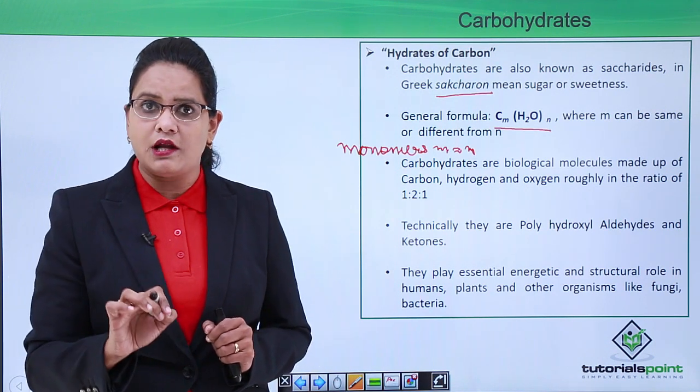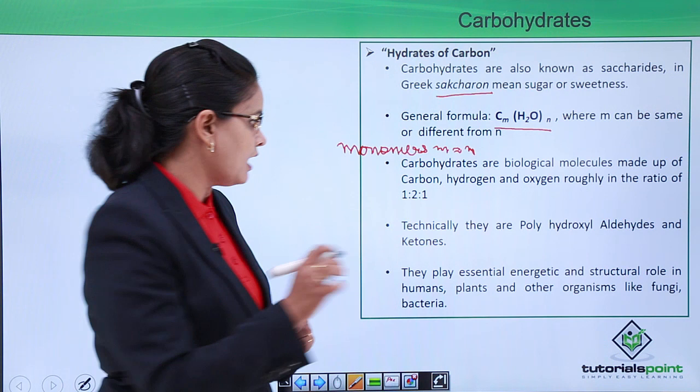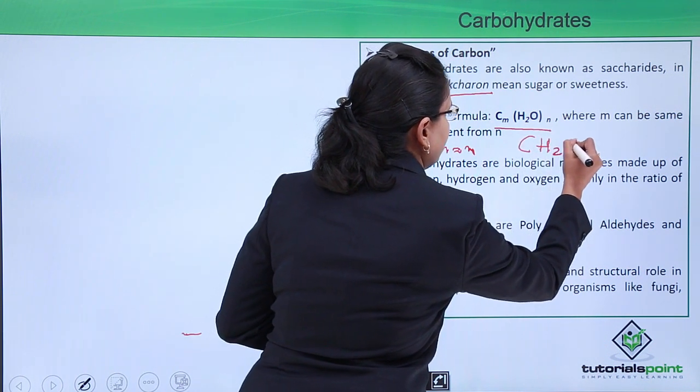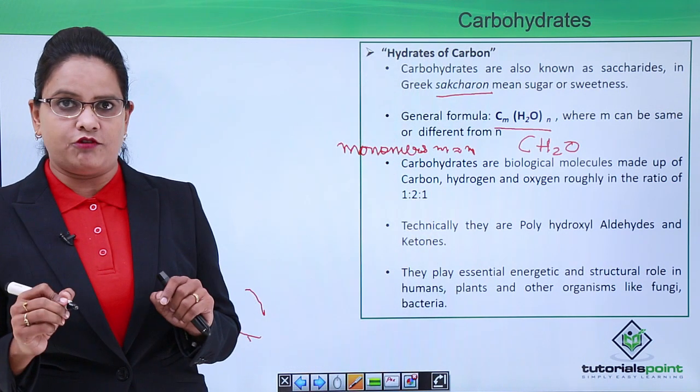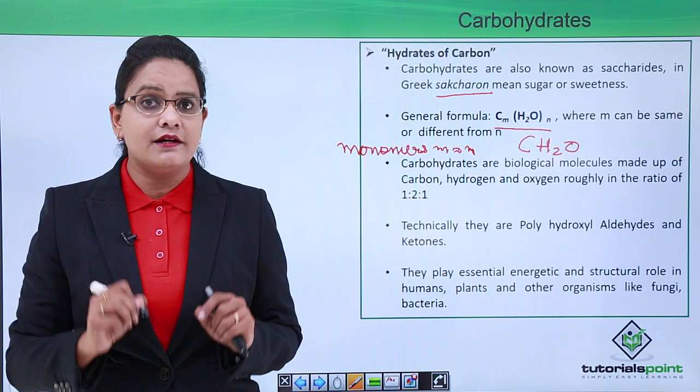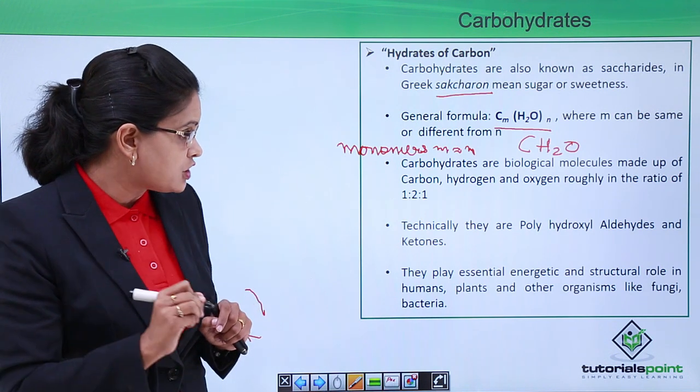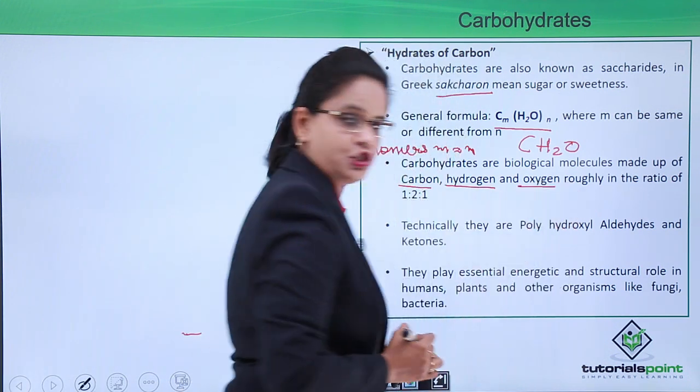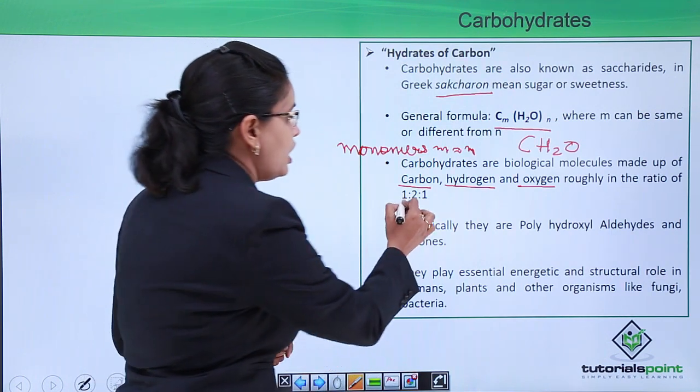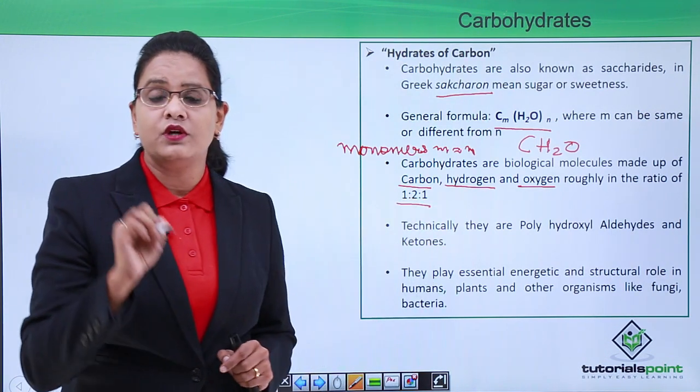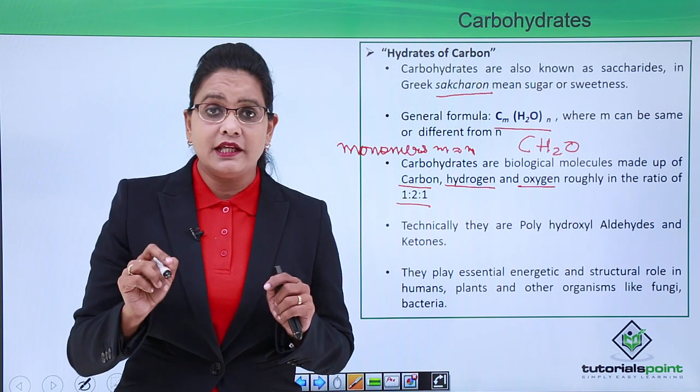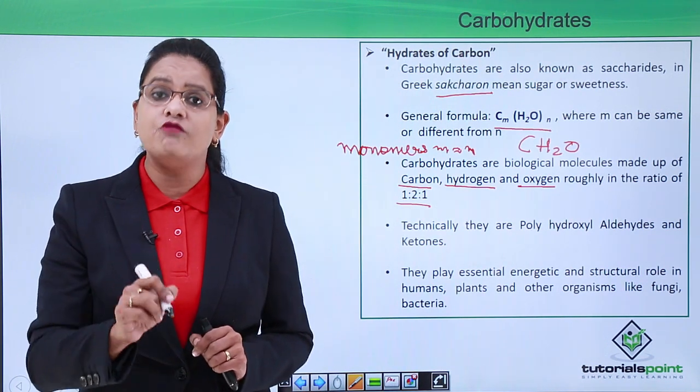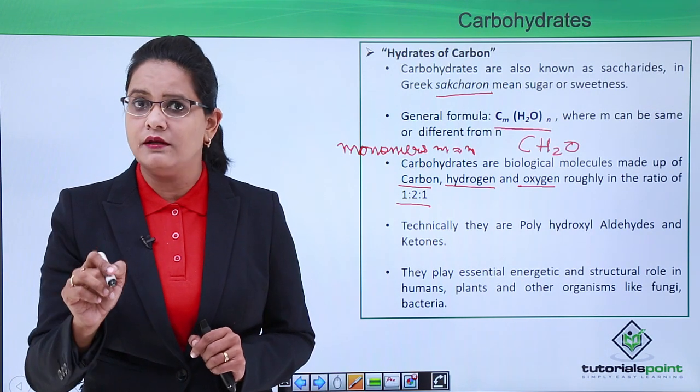So the general formula or the skeletal formula for the carbohydrates becomes CH_2O. As we can see clearly in this formula, the ratio of carbon, hydrogen, and oxygen is generally 1:2:1. But one thing which you have to also notice is that hydrogen and oxygen ratio will always be 2:1, but the ratio of carbon to oxygen may vary.